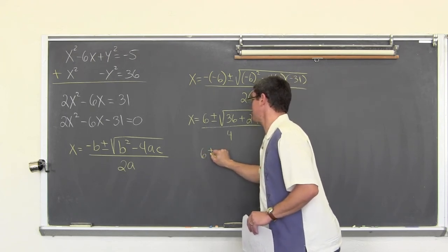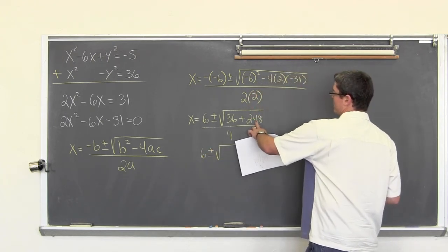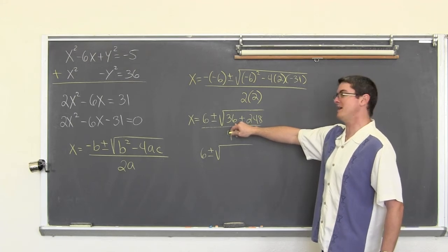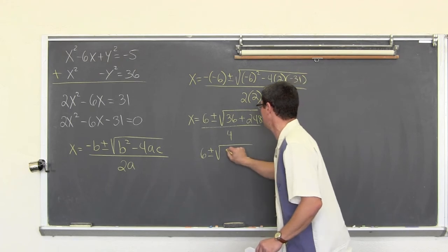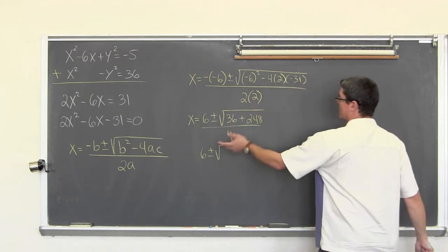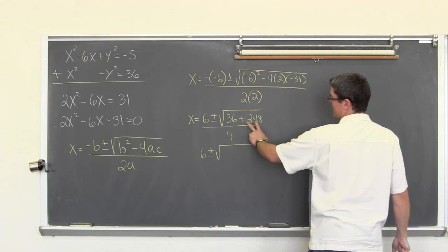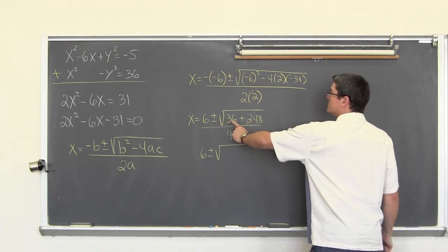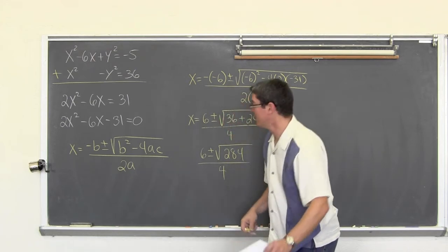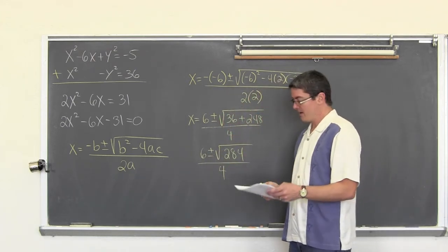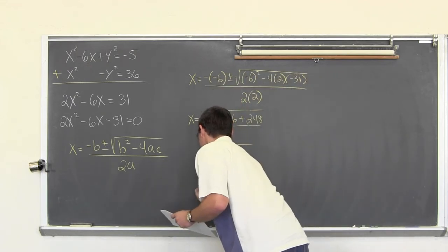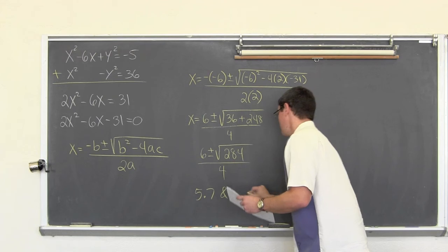Computing six plus the square root of two hundred eighty-four over four and six minus the square root of two hundred eighty-four over four gives x values of approximately five point seven and negative two point seven one. So far so good — it seems like we are going to have a solution to the system. We will take these values and back-substitute them into one of the original equations.